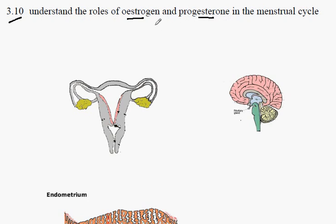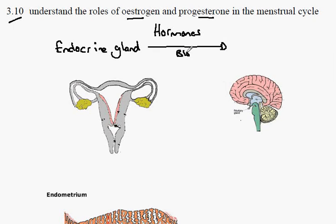Oestrogen and progesterone are both examples of hormones. A hormone by definition is produced in a structure called an endocrine gland. The definition also requires that the hormone will travel through the blood from the endocrine gland to its target tissue. At the target tissue, the hormone will have an effect. In the case of some hormones, including oestrogen and progesterone, there may be multiple effects.